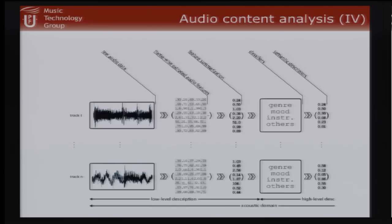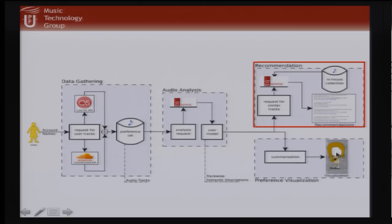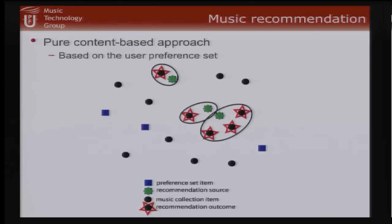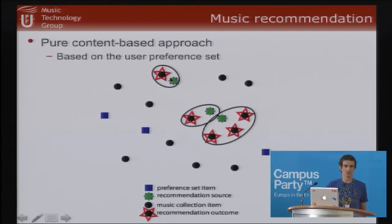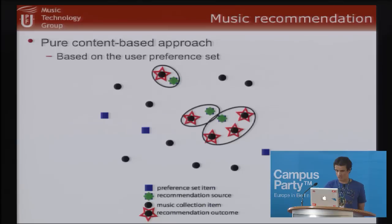Once we have these feature vectors, we can use them to recommend music. Think of each feature vector as a point in a multi-dimensional space. Your favorite tracks are recommendation sources, and the music tracks closest to them in that space are recommended to the user. It's a simple but effective approach to music recommendation based on audio similarity.